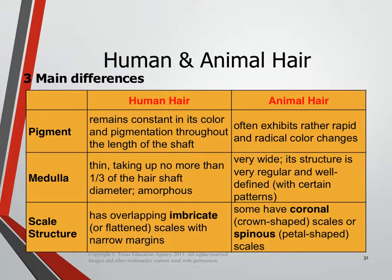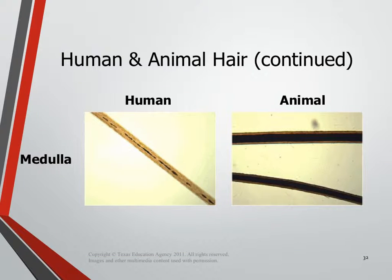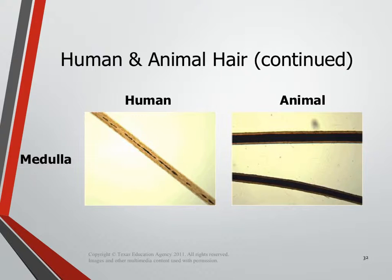For scale structure: human hairs tend to have imbricate scales that are flattened and overlap each other, while animal hairs tend to have coronal or crown-shaped scales. Some even have spina scales which look more like petals than crowns. Looking at the visual example — the human hair has very even, gold-brown pigment color all the way through; the animal hair has much darker, denser pigment. The medulla on the human hair is really skinny, almost like you drew a pencil line in, whereas on the animal hair, the medulla in the center is really big and takes up more space.